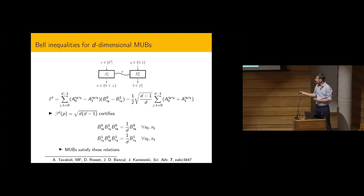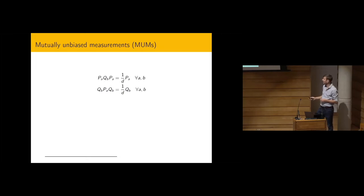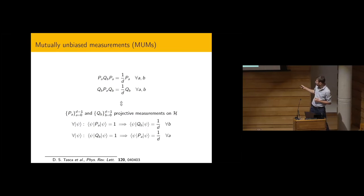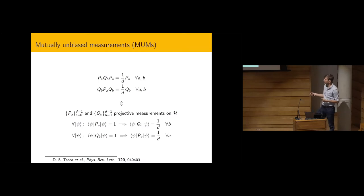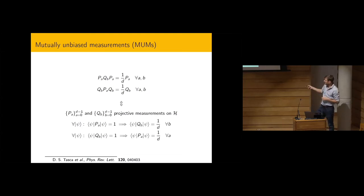Changing to nicer notation: the relations certified in the optimal scenario for two measurements P and Q are what we call mutually unbiased measurements, or MUMs. We show this definition is equivalent to an alternative definition: two projective measurements such that if you have a definite outcome on one, the other gives a uniform outcome — but without assuming the dimension of the Hilbert space. This is a device-independent definition of MUBness.